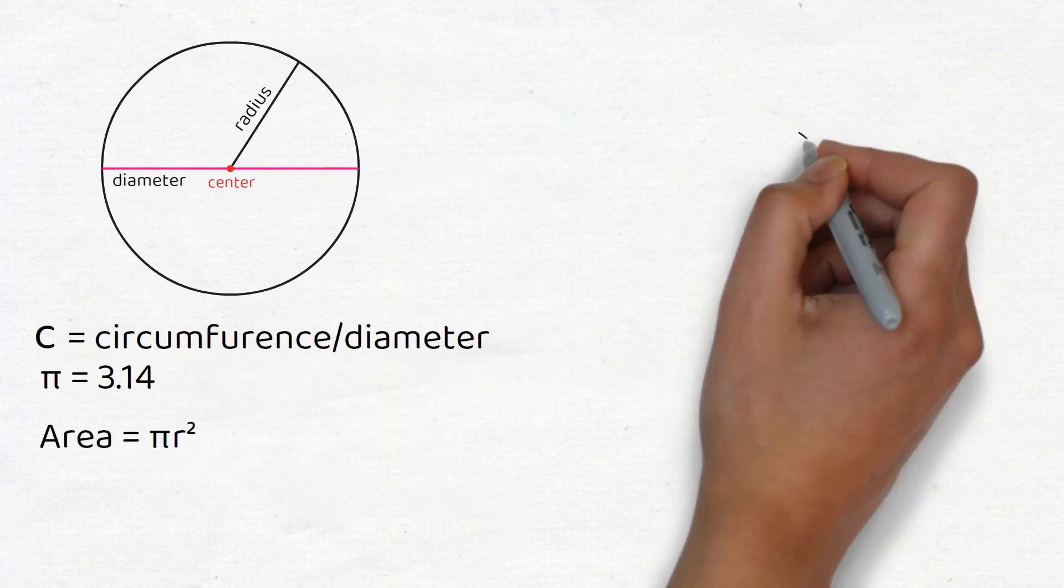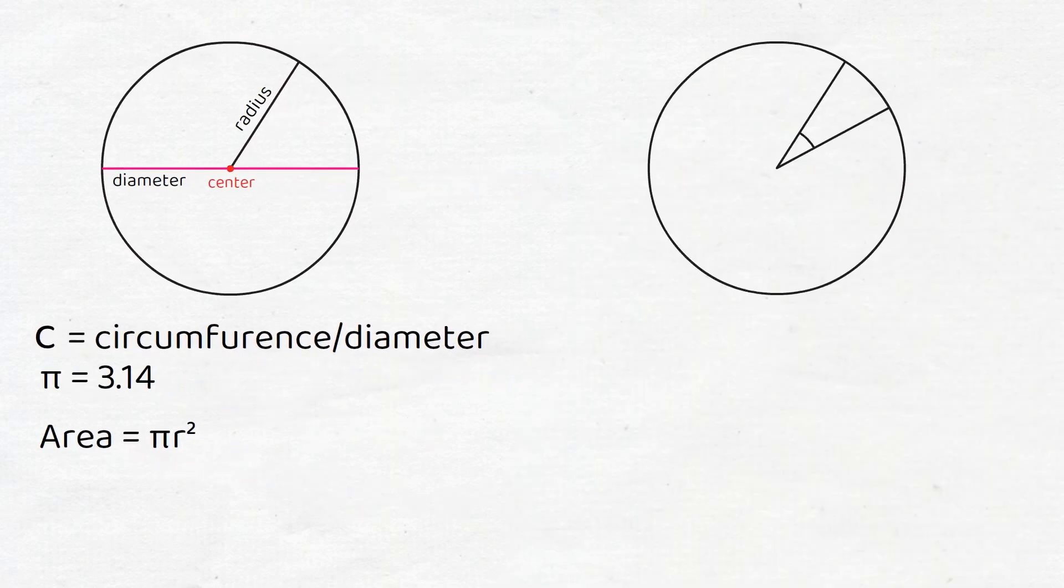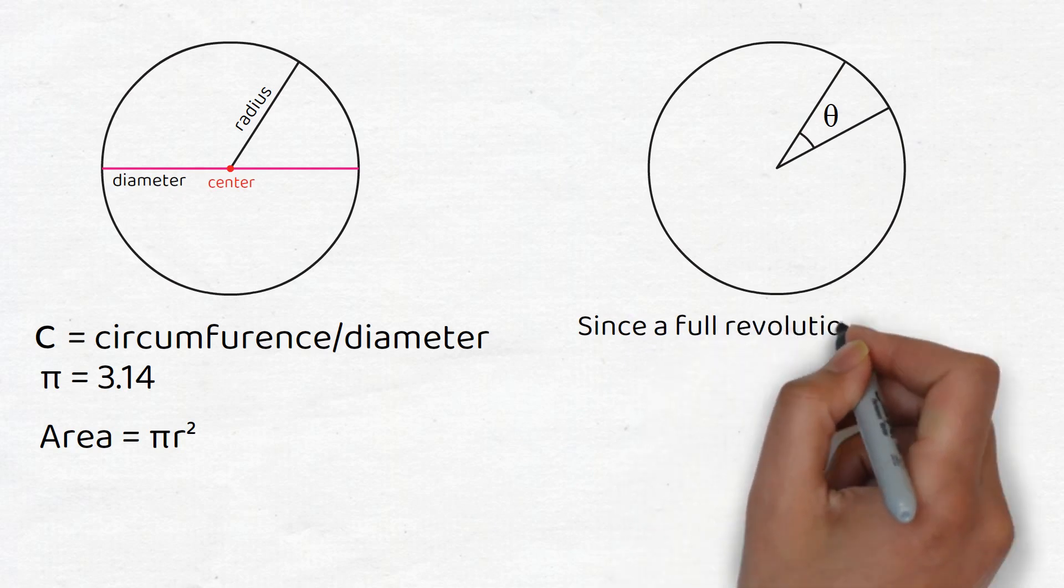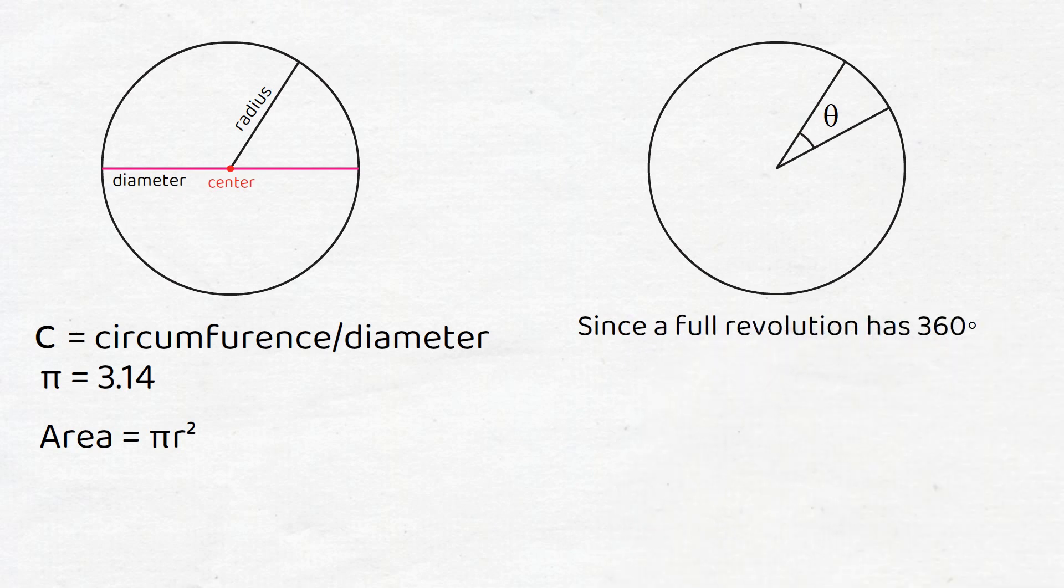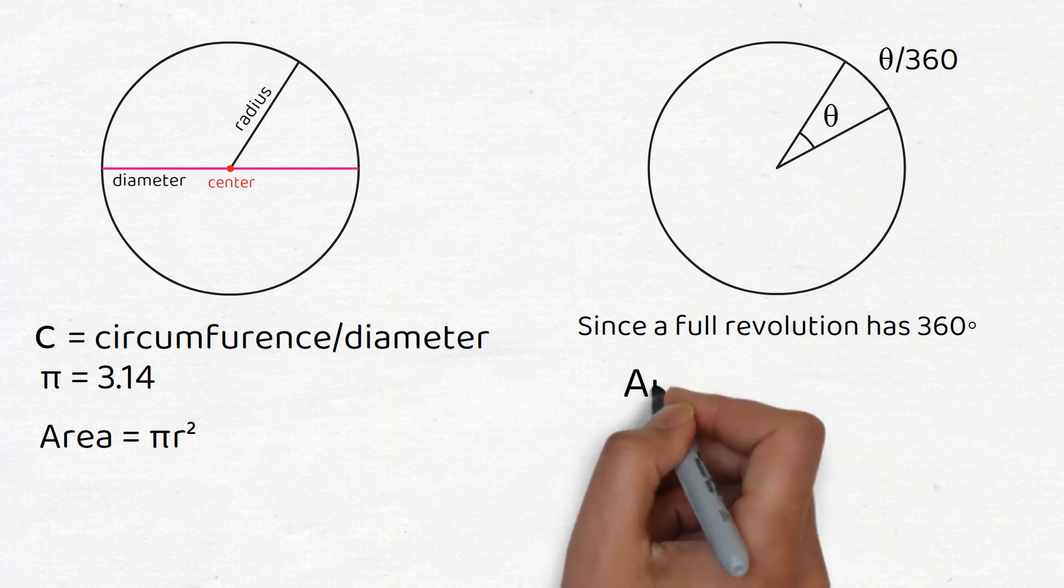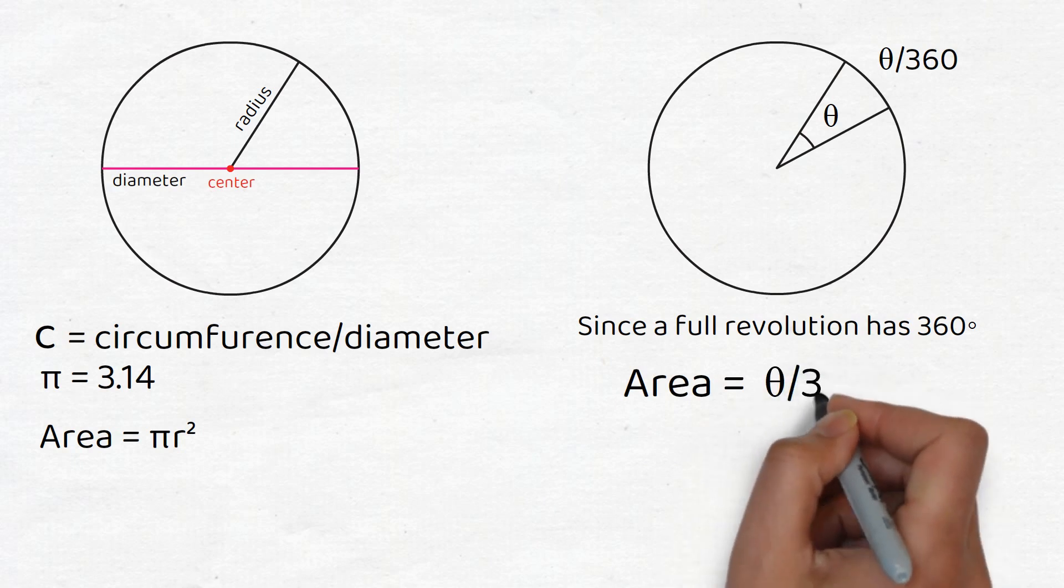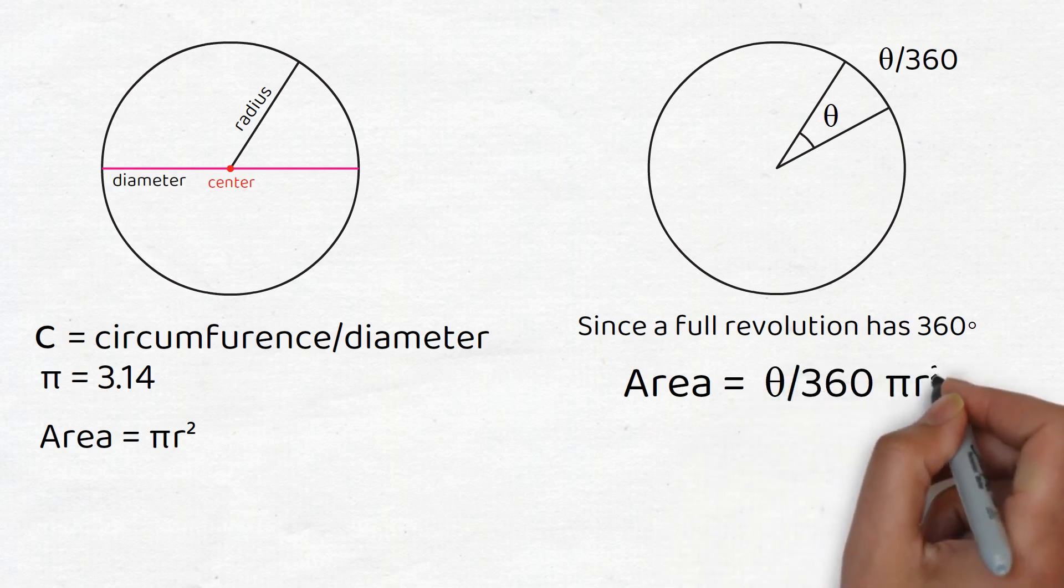Suppose instead that we wish to find the area of a sector, which is part of a circle. This is a pizza-like region, or pizza slice-like region of a circle, as determined by an angle, which we can call by its Greek letter theta. Since a full revolution has 360 degrees, this means that theta divided by 360 is the fraction of the circle that is analogous to the sector. So the area of a sector would be given by theta, the angle carving out the sector, divided by 360 times pi r squared.